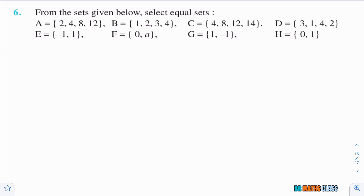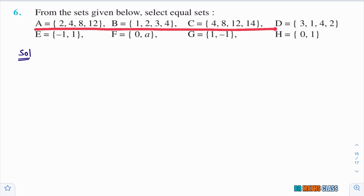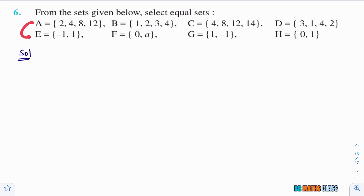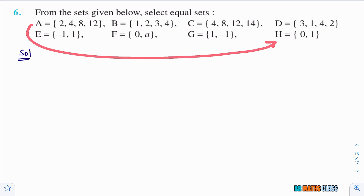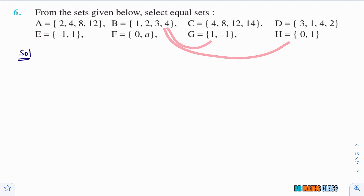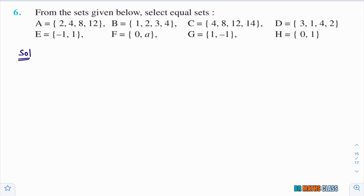This is the last question of this exercise: from the sets given below, select the equal sets. Sets A, B, C, D each have four elements, and sets E, F, G, H each have two elements. Obviously sets from the first group cannot equal sets from the second group since the number of elements differs. So we find equal sets within {A, B, C, D} and within {E, F, G, H}.